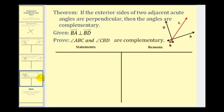Now let's take a closer look at the theorem we're going to prove. If the two exterior sides of two adjacent acute angles are perpendicular, then the angles are complementary. These two black rays, BD and BA, are the exterior sides of the adjacent angles ABC and angle CBD. So given that ray BA is perpendicular to ray BD, we want to prove that angle ABC and angle CBD are complementary.